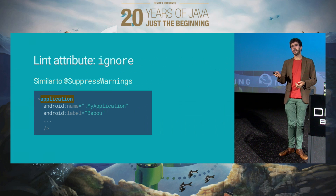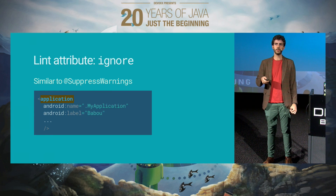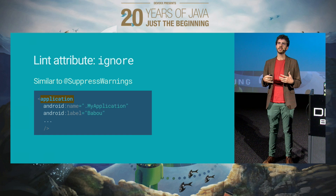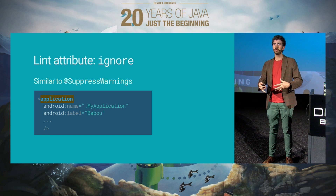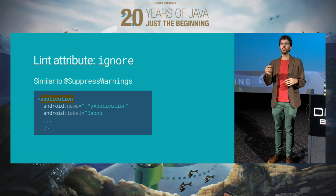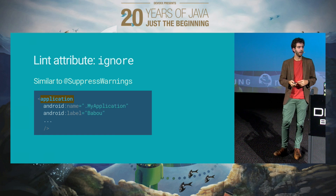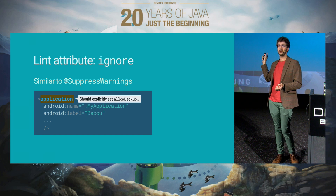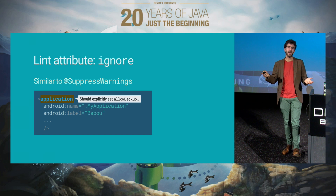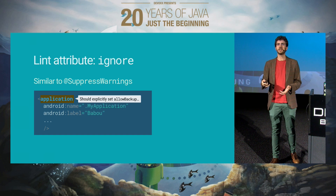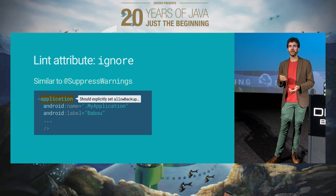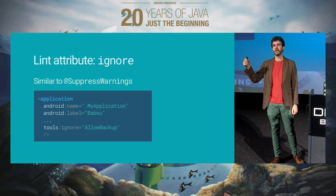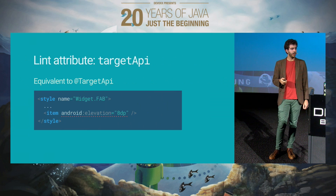There are a few things you can do with the tools namespace. For example, there is the ignore attribute. The ignore attribute allows you to explicitly suppress a warning — it's basically the corresponding of the @SuppressWarnings annotation in Java. If you ever need to suppress some kind of lint warning, you would use the ignore attribute and just specify the name of the lint inspection that you want to suppress.